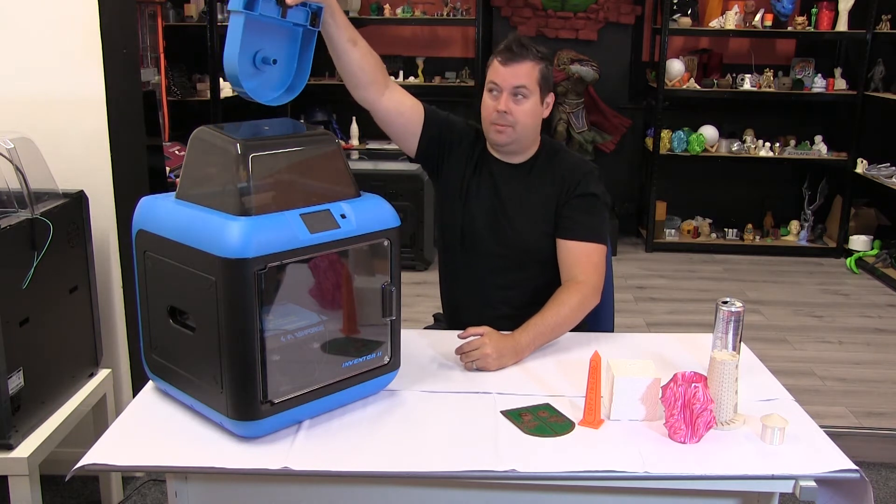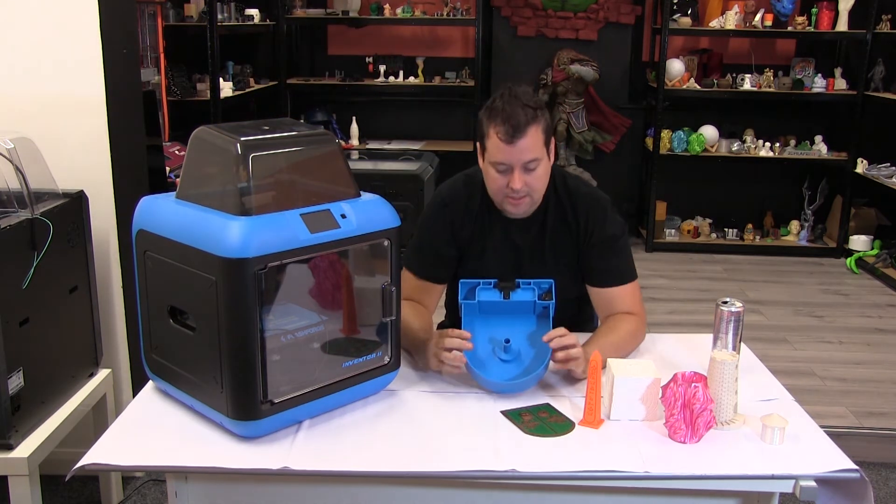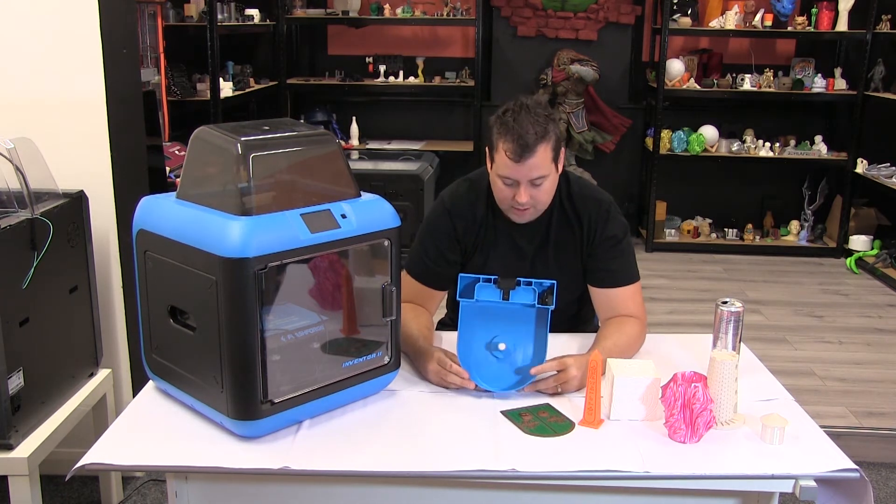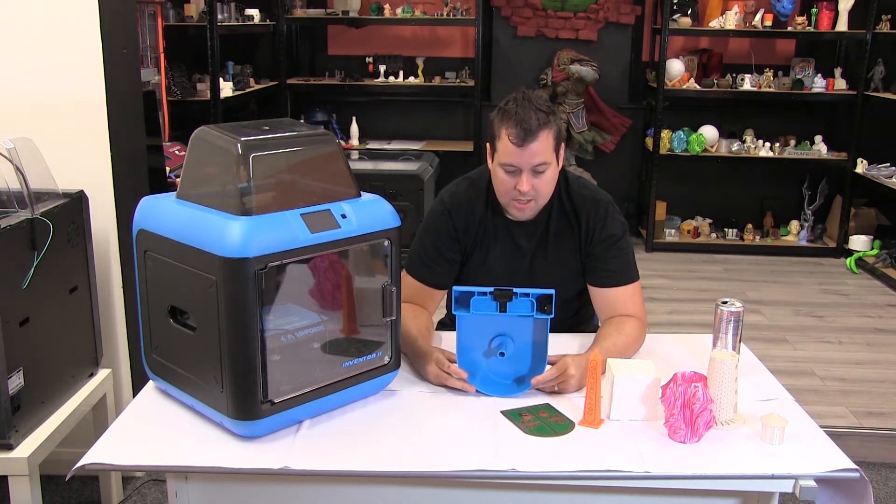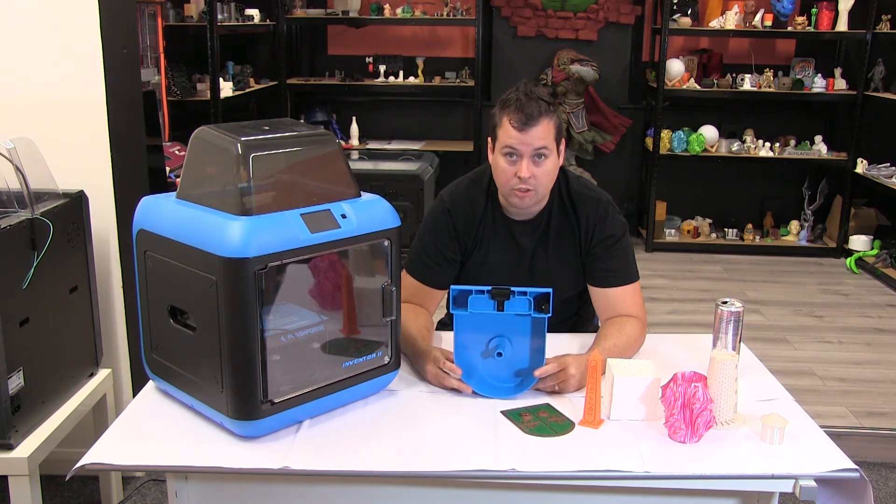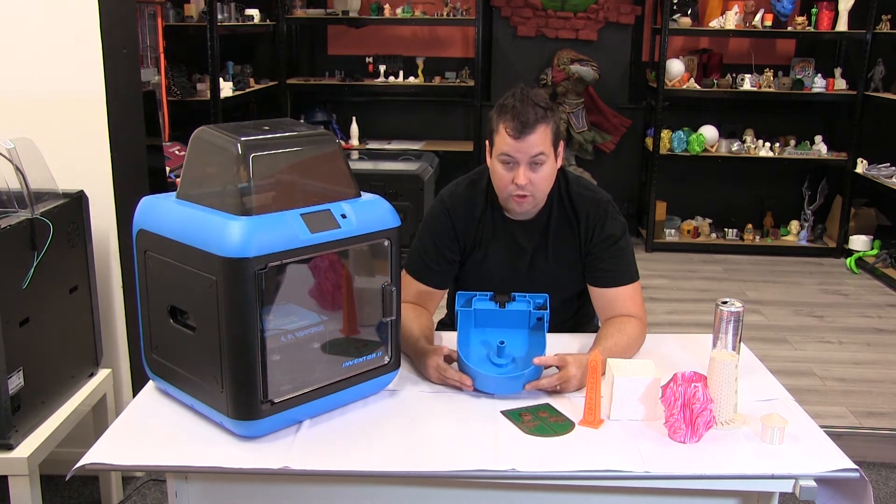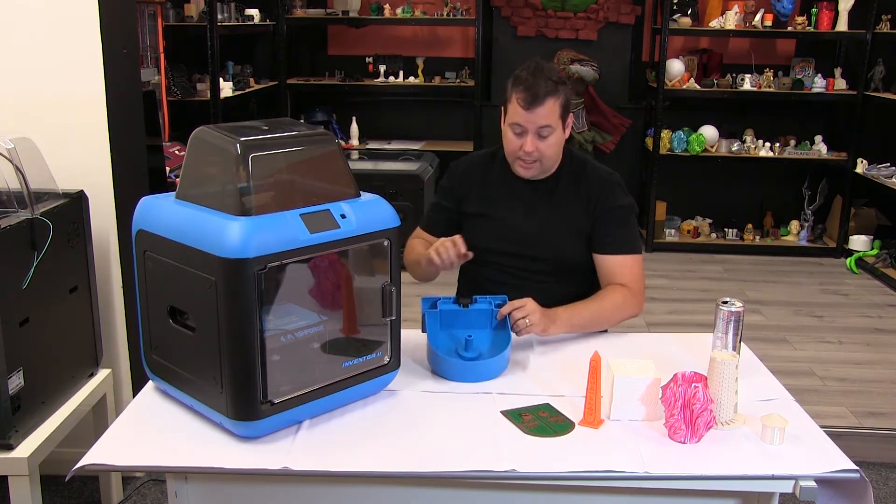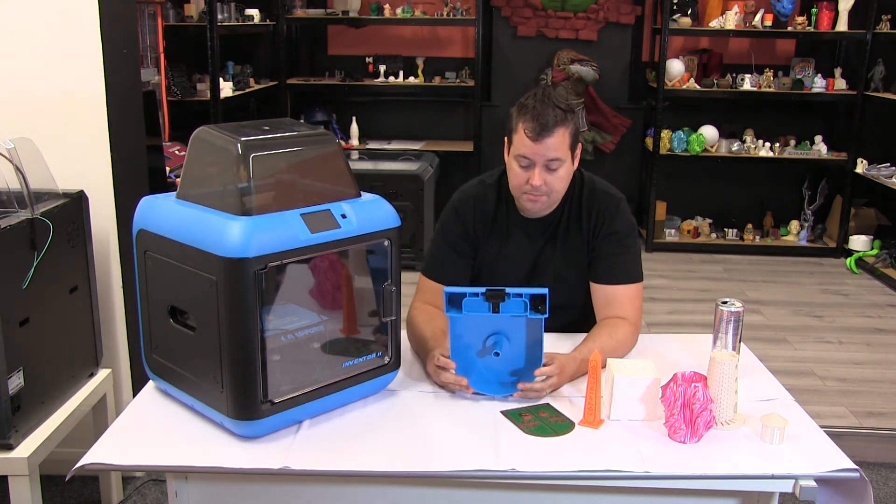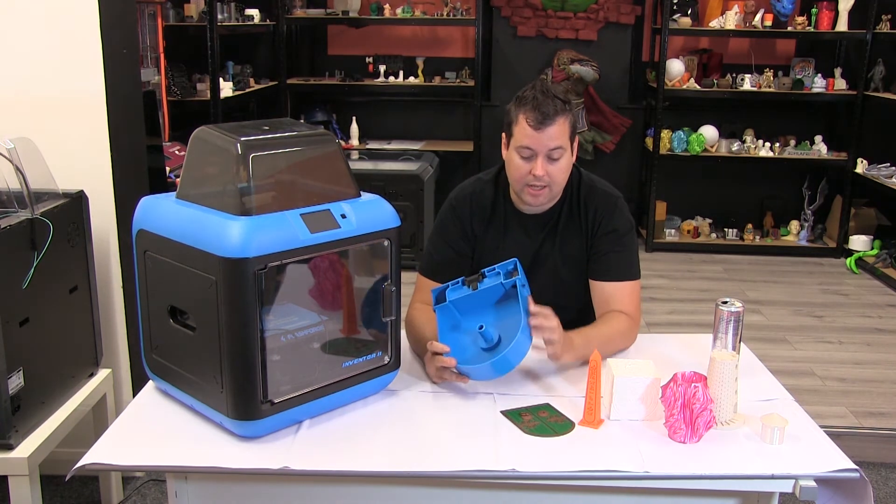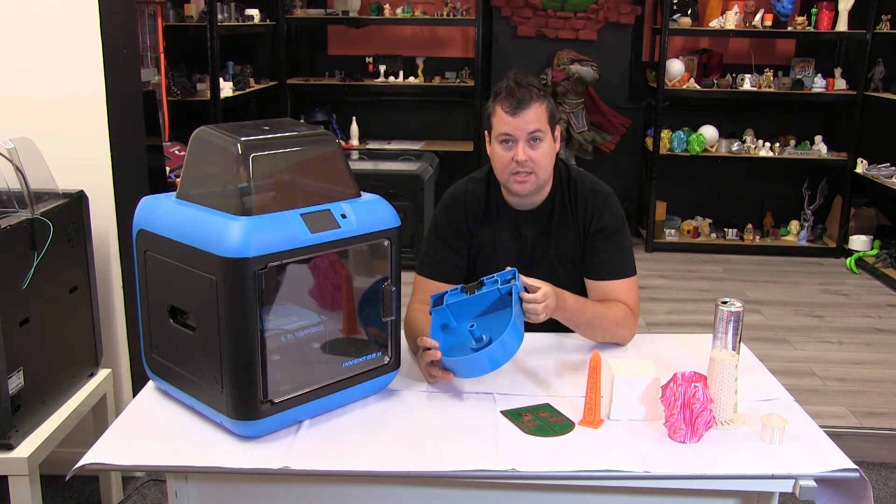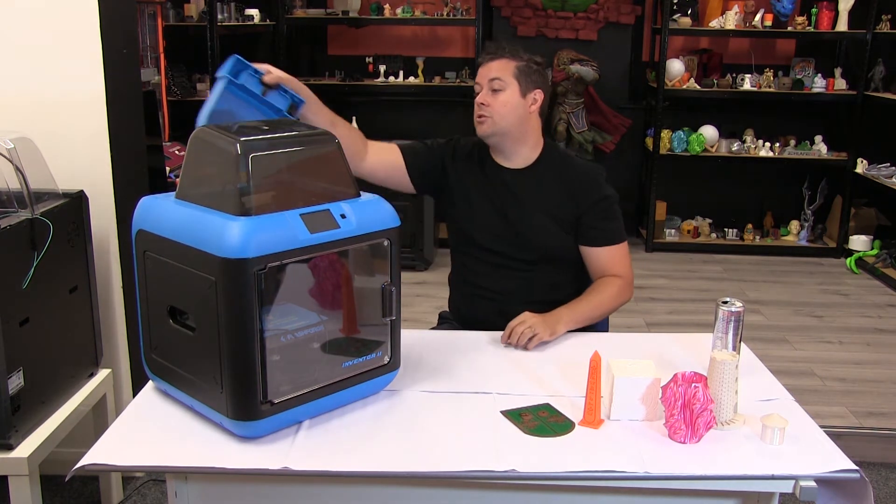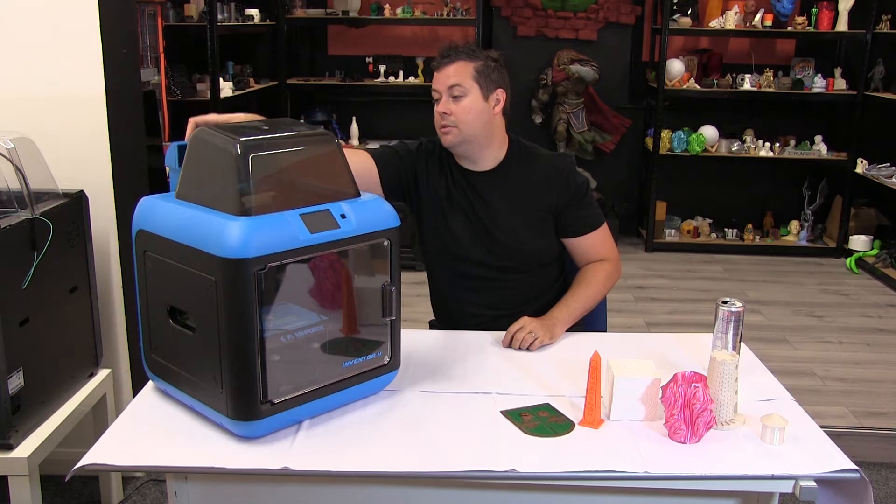The filament goes in the back. This has the same issue as other Flashforge machines that use enclosed spool holders, which is that not all spools will fit in this. You can print externally with the machine, but it's worth noting that the filament sensor is integral to this, so if you were to print externally, you would lose the filament sensor.